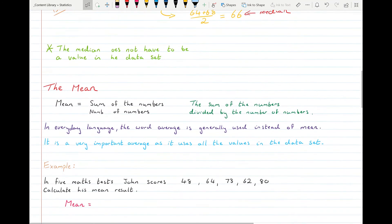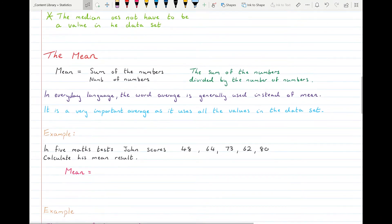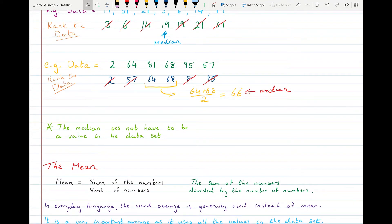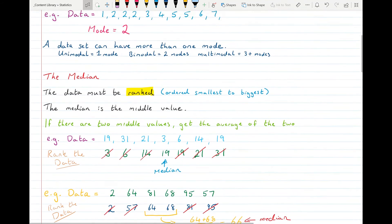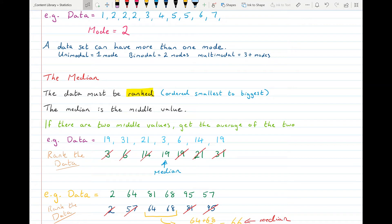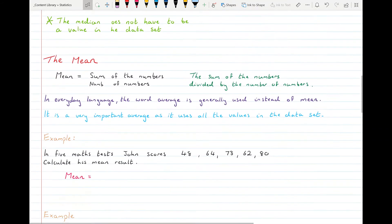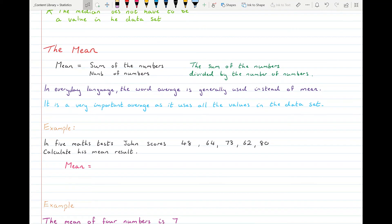And the last type of average is the one you should be most familiar with. It's called the mean. Just you wouldn't call it the mean normally, you would have been calling it the average. And how you find the mean is you add all the numbers up together and then you divide by however many numbers you had to add. So it's a very important average as it uses all the values in the data set. So everything is included.